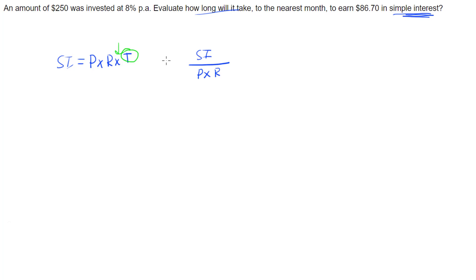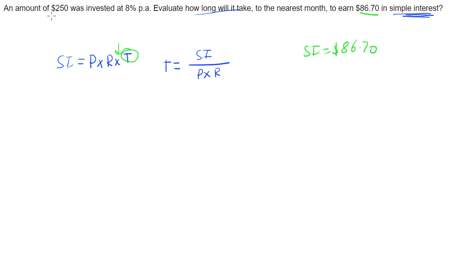This will give us our rule for time. Now let's look at our information. We've got our simple interest of $86.70, and our principal of $250.